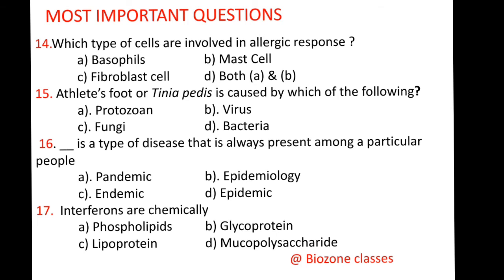Question number 17: Interferons are chemically — A. Phospholipids, B. Glycoprotein, C. Lipoproteins, D. Mucopolysaccharide. Interferons are antiviral proteins, also called cytokines. The correct option is C, lipoprotein.